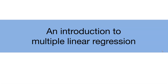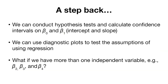First, we'll start with a gentle introduction to multiple linear regression. So before we start, let's take a step back. Up to this point, we've considered in detail the linear regression model and talked about how the mean response is related to a single explanatory variable. We can conduct hypothesis tests and calculate confidence intervals on the intercept and slope, beta 0 and beta 1. We can also use diagnostic plots to test the assumptions of using regression.